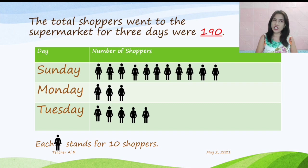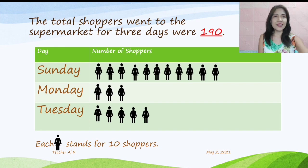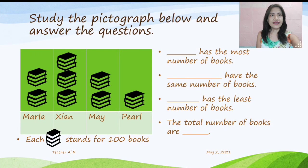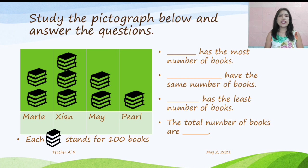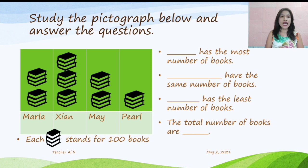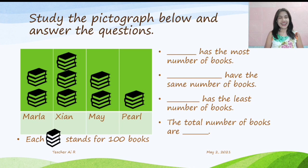Let's have some drill to check if you understood the discussion. Always make sure to look at the legend given to answer. We have here: study the pictograph below and answer the questions. We have pictures of books. The legend says each book stands for 100 books. The questions ask: who has the most number of books, who has the same number of books, who has the least number of books, and what is the total number of books.